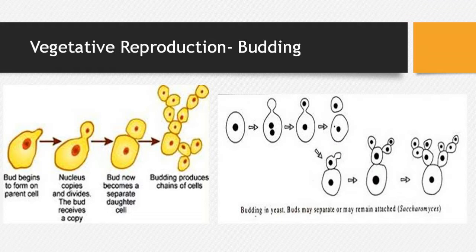This describes the budding process in yeast. A small bud comes out from the cell, and this bud enlarges. The original nucleus also enlarges, divides, and one part moves into the bud. Ultimately the bud becomes a separate daughter cell. This process repeats, forming a pseudo-mycelium. This diagram of Saccharomyces clearly shows bud formation leading to pseudo-mycelium.